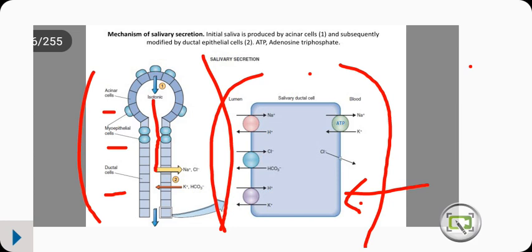On the luminal membrane we have: first, the sodium-hydrogen exchanger; second, the chloride-bicarbonate exchanger; and third, the hydrogen-potassium exchanger. On the basolateral side, we have a chloride channel and the sodium-potassium ATPase, which uses ATP.